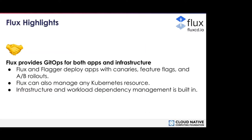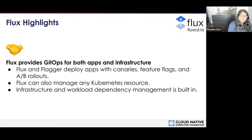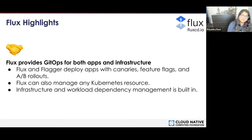Now I'm going to go back to those statements I promised I'd elaborate on. The first one is that Flux provides GitOps for both apps and infrastructure. Flux, along with Flagger, actually deploys apps with canaries, feature flags, and A/B rollout — so you can utilize any of your progressive delivery needs. There is a great self-led workshop that includes Flagger at eks.handson.flagger.dev. Also, Flux can manage any Kubernetes resource, so basically everything you're already using, Flux can manage.